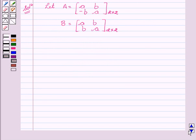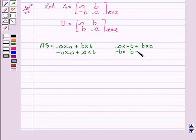Now let's start the product AB equal to A into A plus B into B, A into minus B plus B into A, minus B into A plus A into B, minus B into minus B plus A into A.